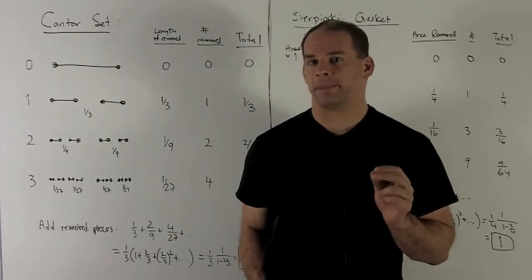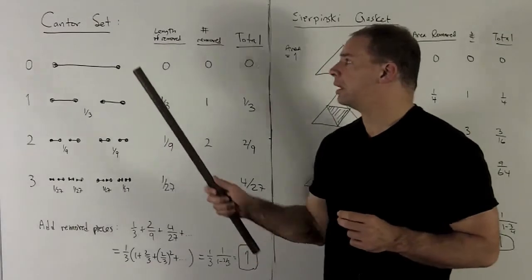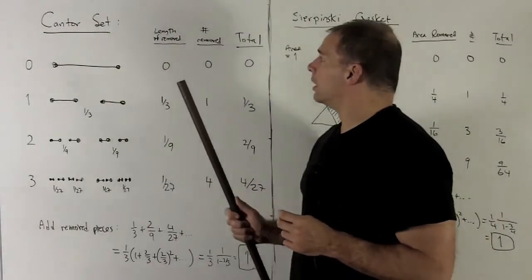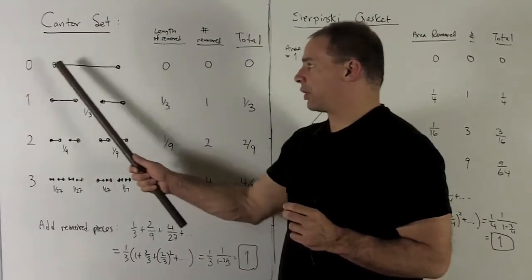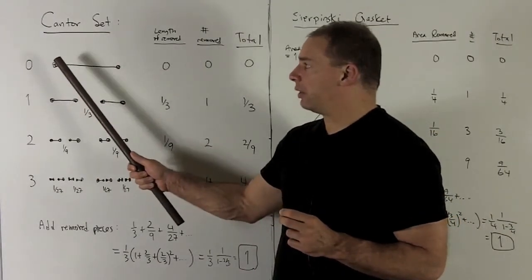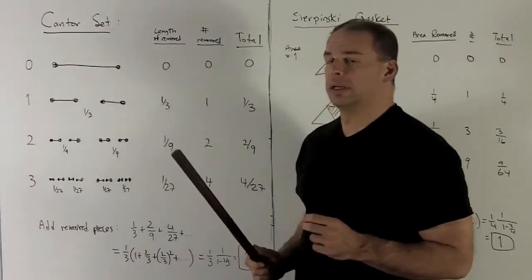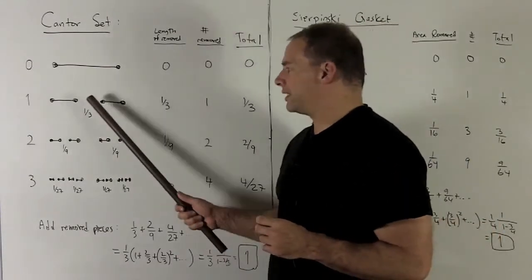Now for a fun example of geometric series, we have the Cantor set. The construction of the Cantor set is as follows: stage zero, I just have the unit interval from zero to one. Stage one, I'm going to...